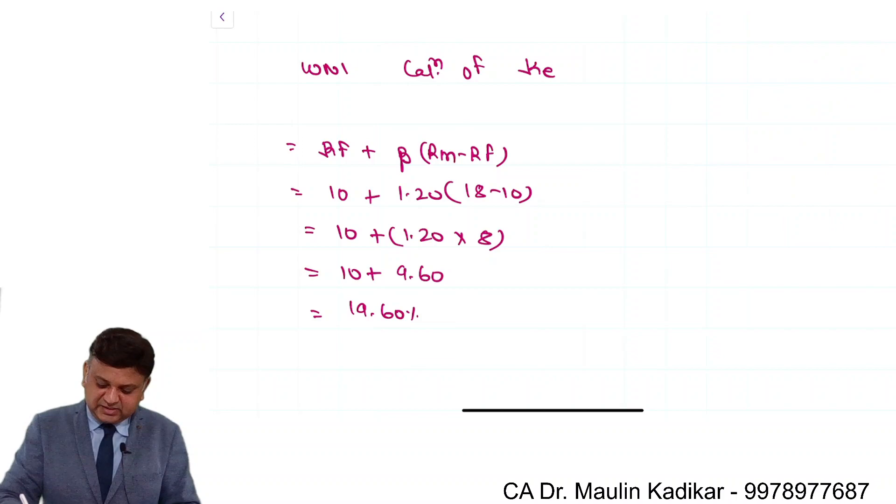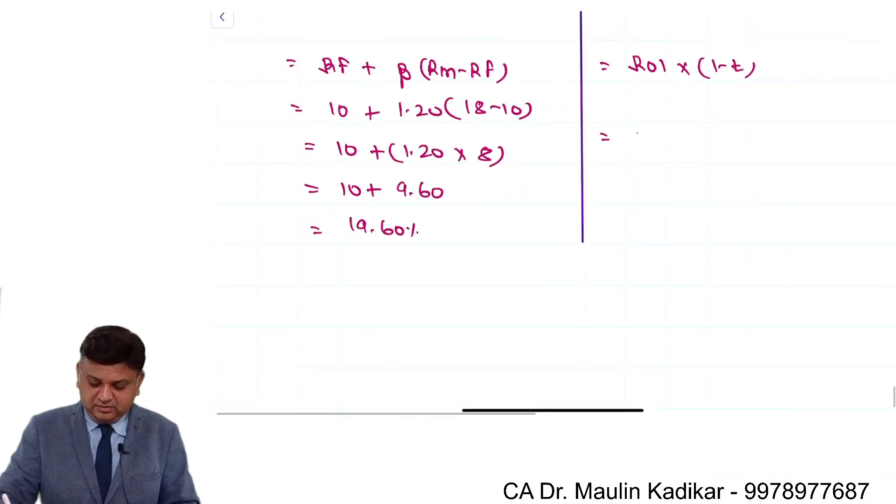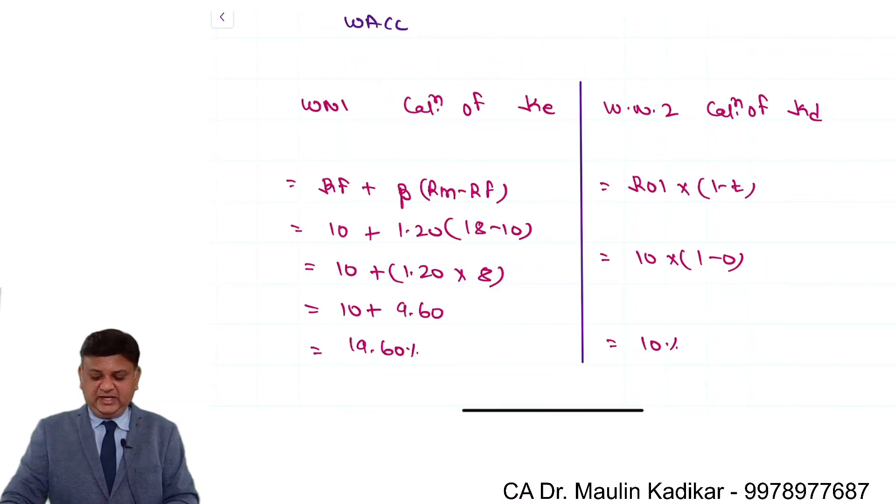As far as the cost of debt financing is concerned, once again we make an assumption that we will borrow at a risk-free rate of return. So KD, it is rate of interest into 1 minus T. What is rate of interest? 10 into 1 minus 0. So it is 10% itself. That is the way the KD is calculated.